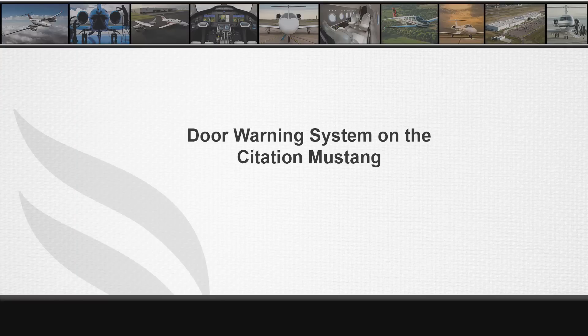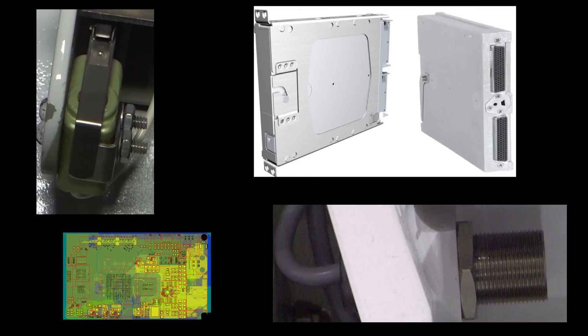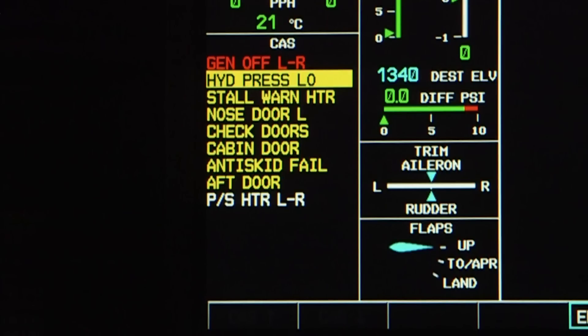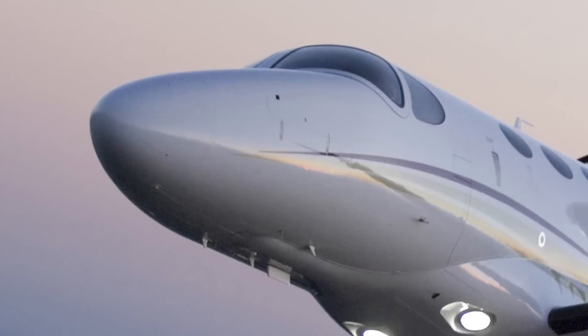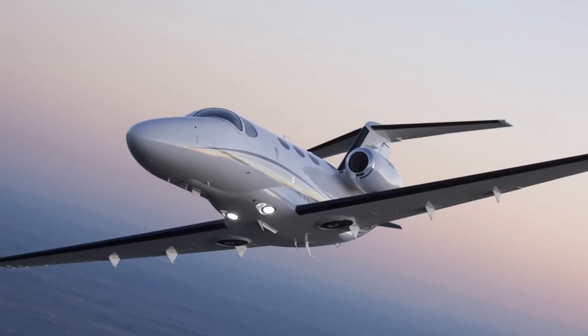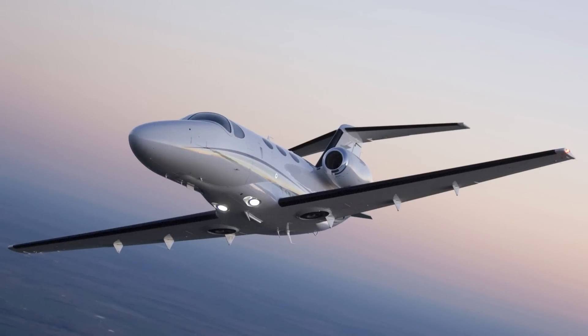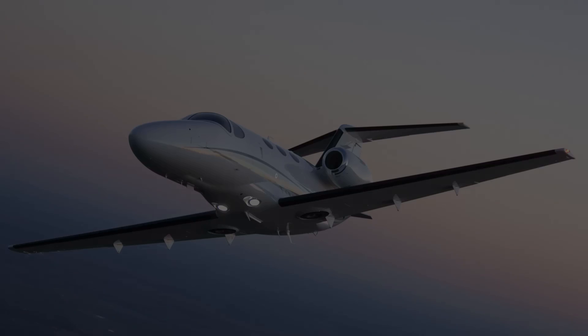The Mustang's door warning system monitors the cabin entry door as well as the baggage doors. It utilizes sensor switches, the door monitor PCB, and GEAs 1 and 2. It displays indications on the CAS window of the MFD. This video discusses the system's CAS messages, the location of system components, and the utilization of CDMS to troubleshoot.